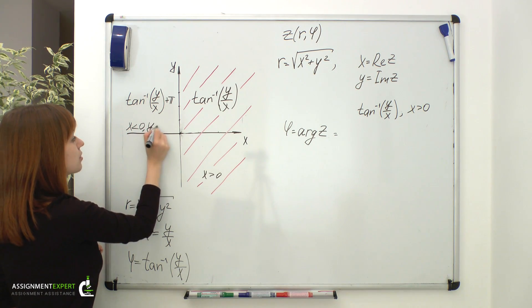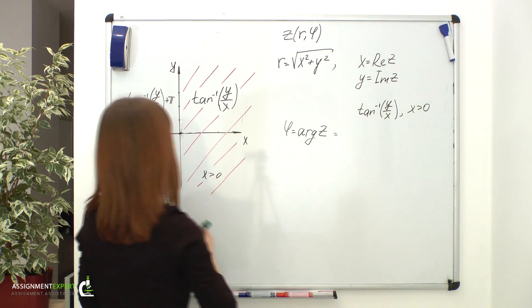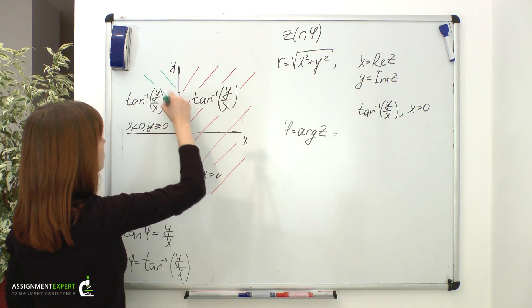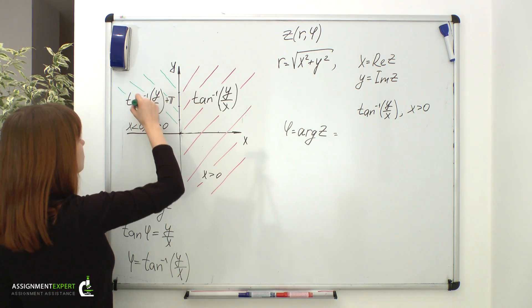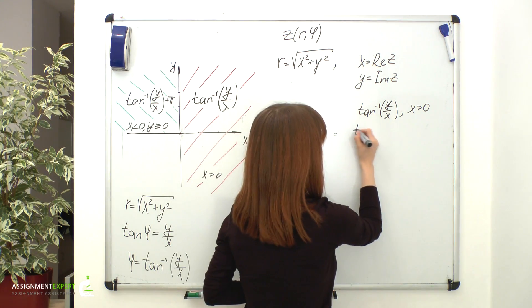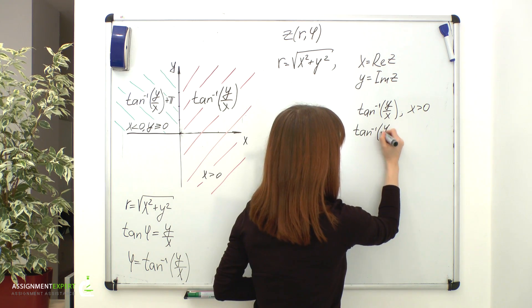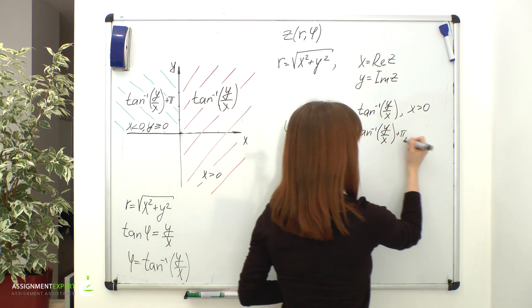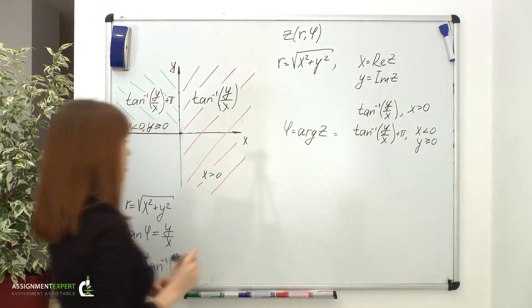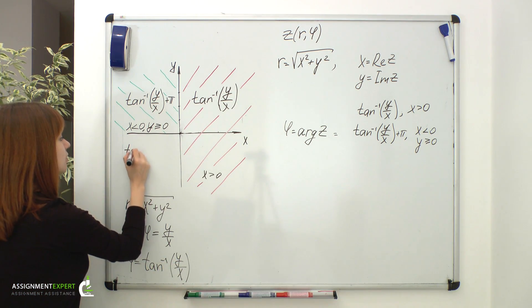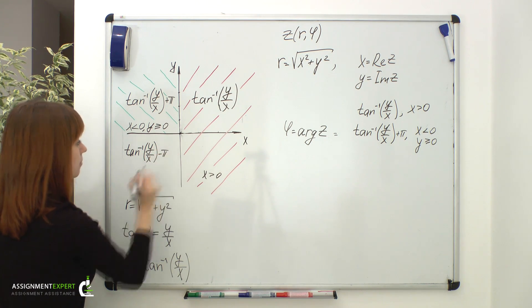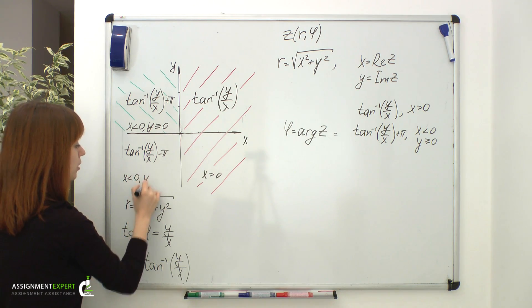For the second quadrant, when y is greater than or equal to zero, it's inverse tangent of y over x plus pi, for x less than zero and y greater than or equal to zero. For the third quadrant, we have inverse tangent of y over x minus pi. That's when x is less than zero and y is less than zero.